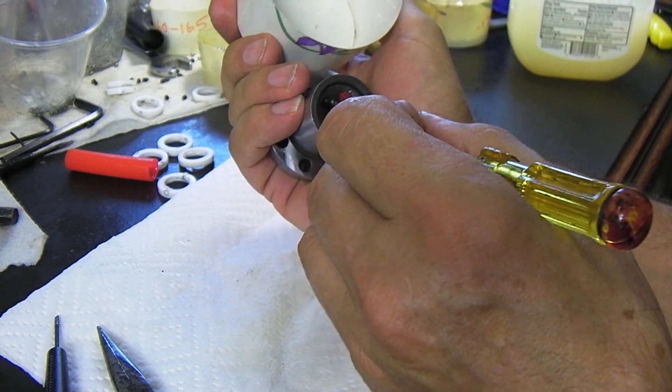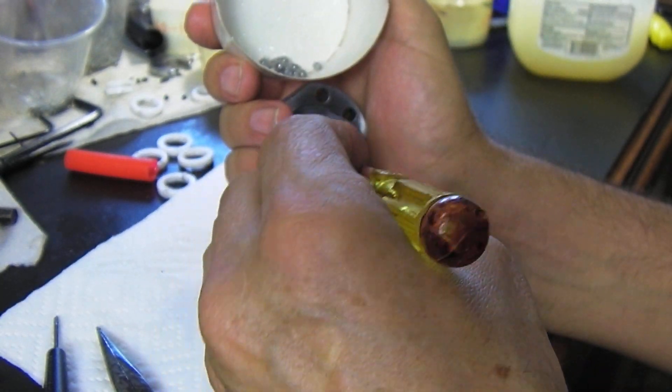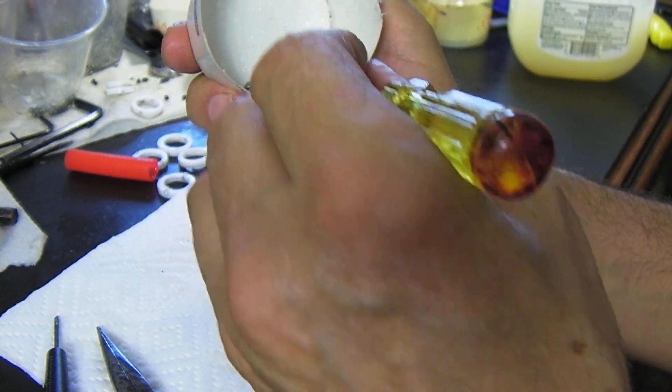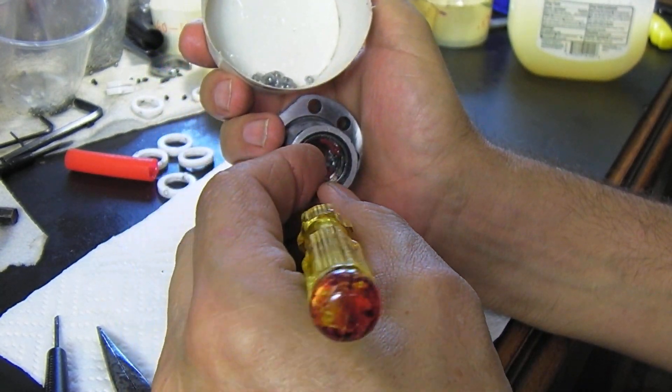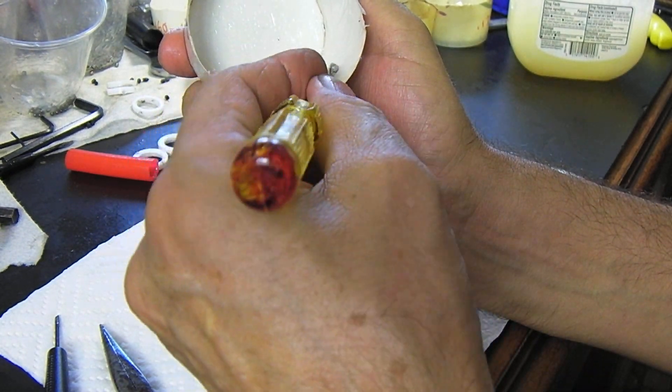Flip the nut around. I'm going to start with the center row now. Same thing—they all have Vaseline on them, and we're just sticking them in there.